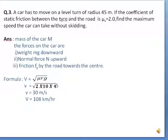Now come to third problem. A car has to move on a level turn of radius 45 meter. If the coefficient of static friction between the tires and the road is μs = 2, find the maximum speed the car can take without skidding.